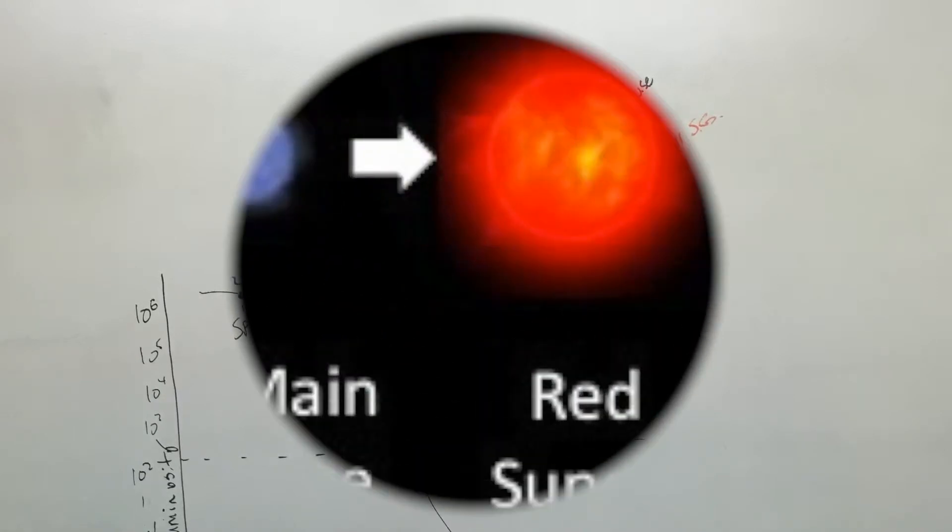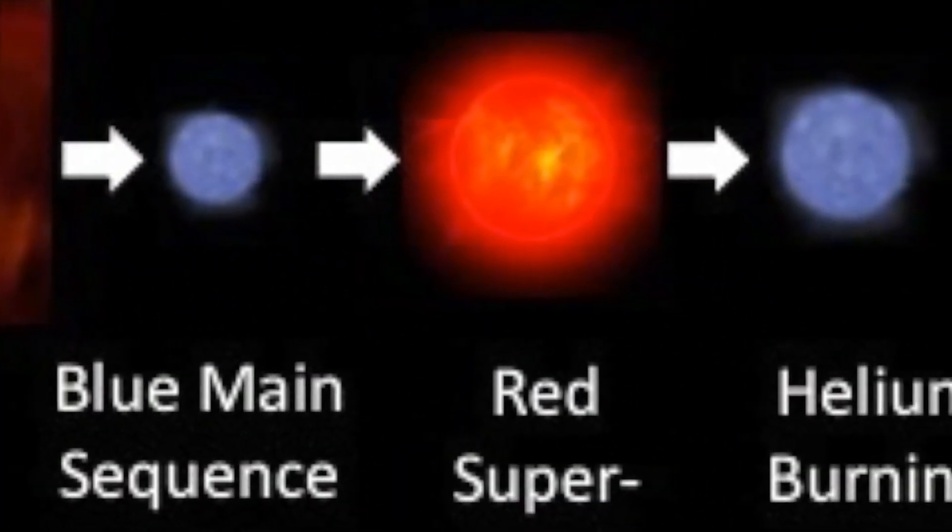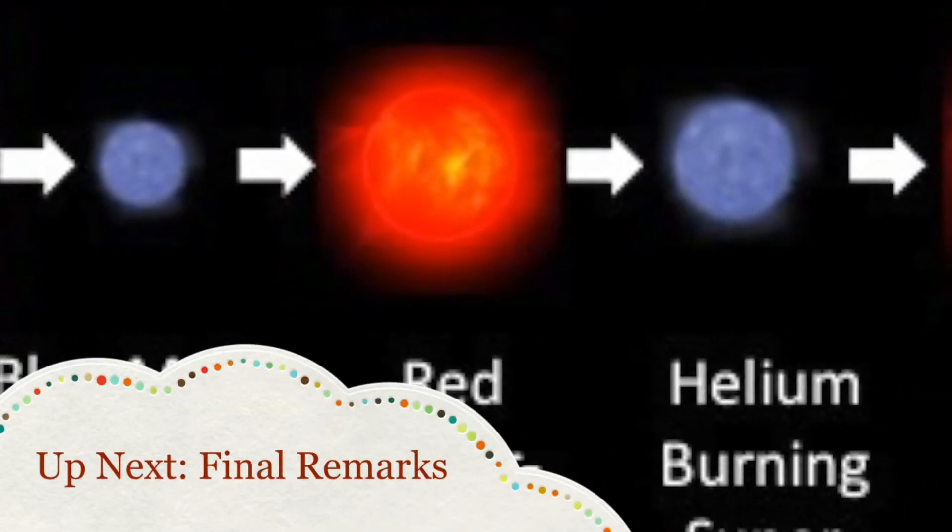After this, a multiple shell fusion supergiant begins to form. It burns out of helium, shrinks and heats till fusion of heavier metals begin.